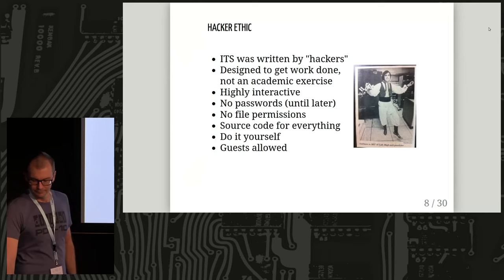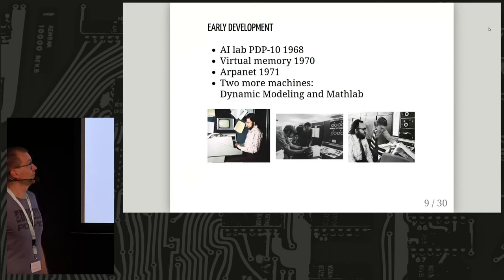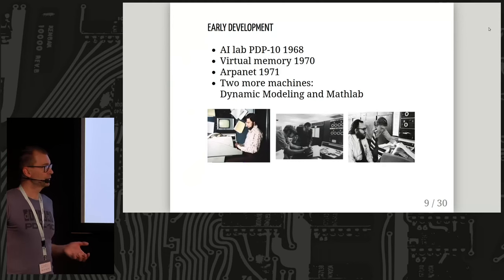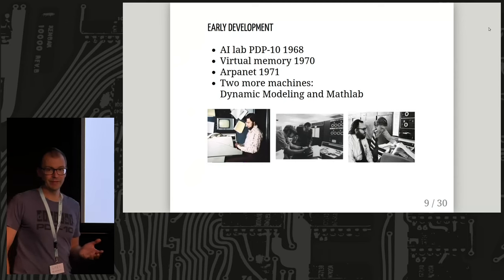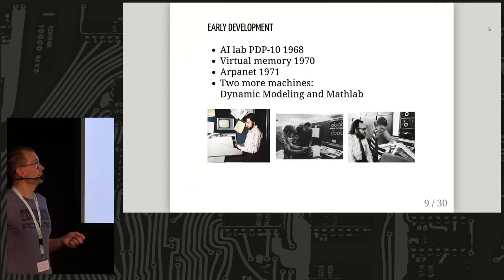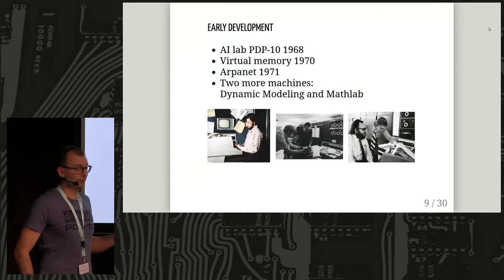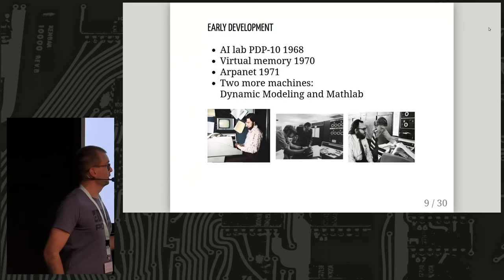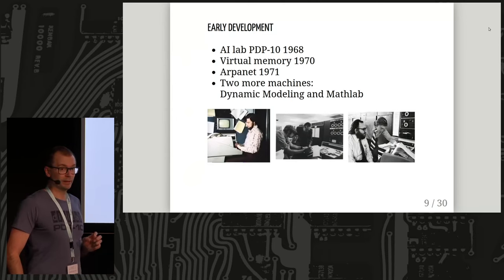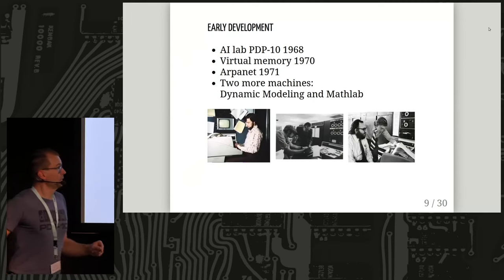After the initial period, there was a period of further development. The AI Lab got a newer PDP-10 to replace their PDP-6. In the late 60s they added virtual memory; the first system didn't even have disks, but once they added disks they had swapping and paging. They joined the very fresh ARPANET in the early 70s, and two more groups got their own PDP-10s and started using ITS. Here's one of the very few actual photos of the AI Lab PDP-10.